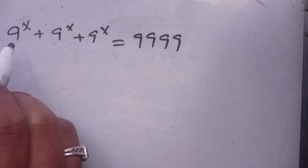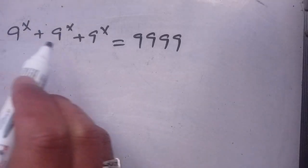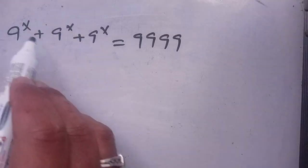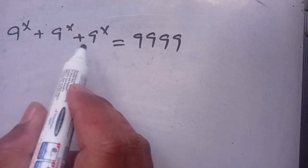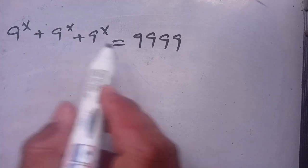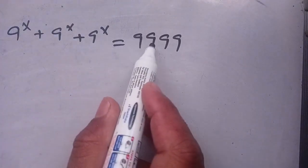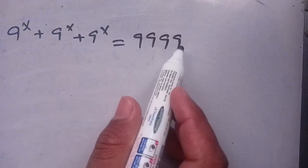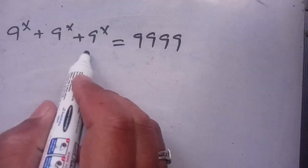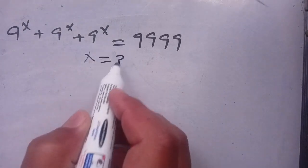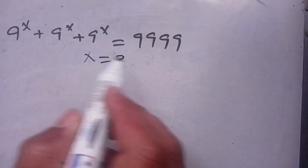In today's video, we are going to solve this exponential equation: 9 to the power x plus 9 to the power x plus 9 to the power x is equal to 9999, and we have to find the value of x which satisfies this exponential equation.